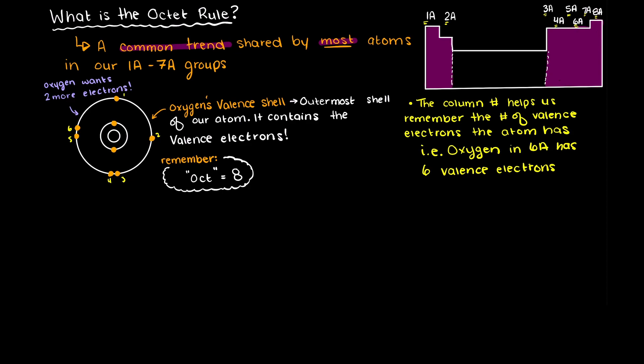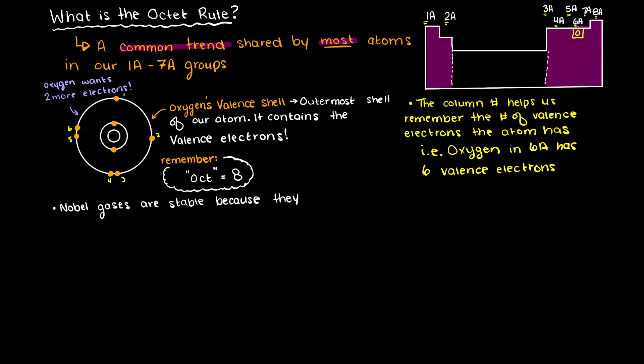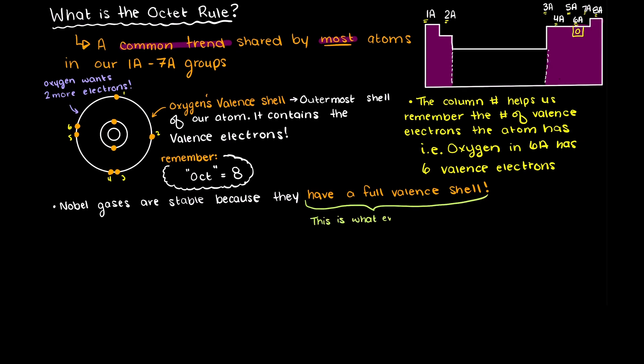We know that atoms that follow the octet rule want to react in such a way that they will have 8 electrons in their valence shell. As we know, the noble gases are very stable since they are the only group with 8 valence electrons. Meaning they are non-reactive as an element can get. They do not want to give or receive any more electrons, and this is a state that all the other atoms in groups 1-7a are trying to achieve with the octet rule.